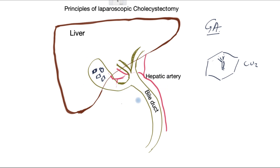Instruments are then inserted. The picture the surgeon wants to see shows the liver at the top and the gallbladder below it. The gallbladder is attached to the bile duct, and the main artery that supplies the liver splits into two, with the right side giving off a small artery to the gallbladder.